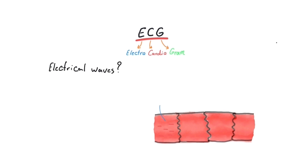When the heart receives a signal to contract, a process called depolarization begins. Positive ions — mainly sodium — rush into the cell, making the inside more positive. This electrical change triggers muscle contraction. Those positive ions can then travel through the gap junctions into neighboring cells, triggering depolarization there as well. This process spreads very quickly throughout the heart. As these electrical impulses move through the heart in a specific direction, they create a net electrical vector — and that's what we're actually measuring in an ECG: the direction and strength of the heart's electrical activity, shown as waves on the graph.